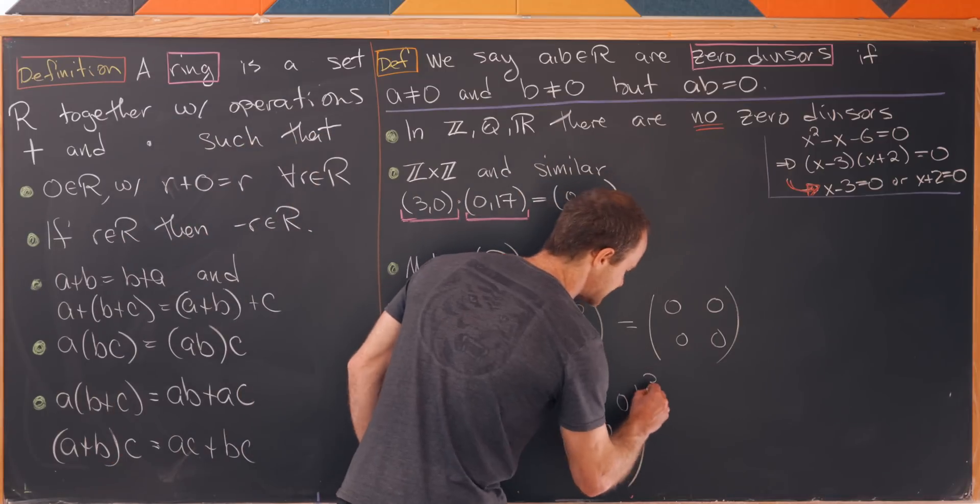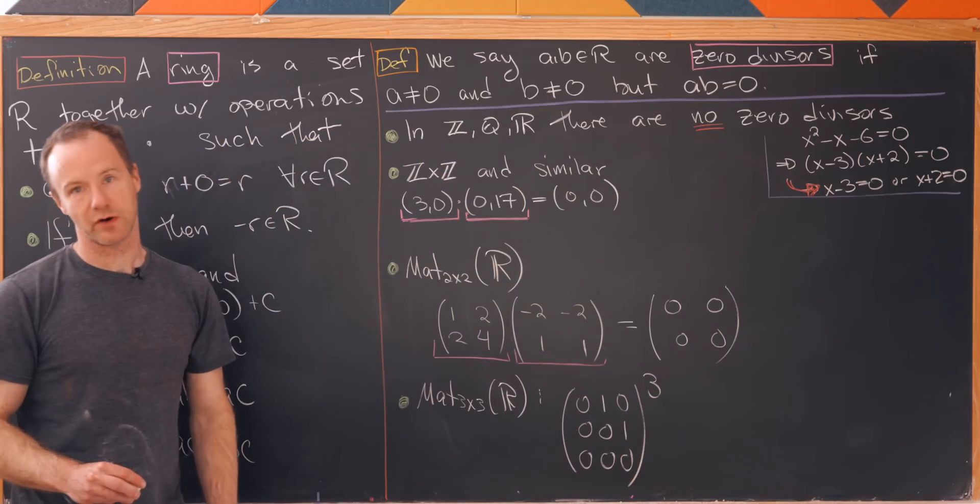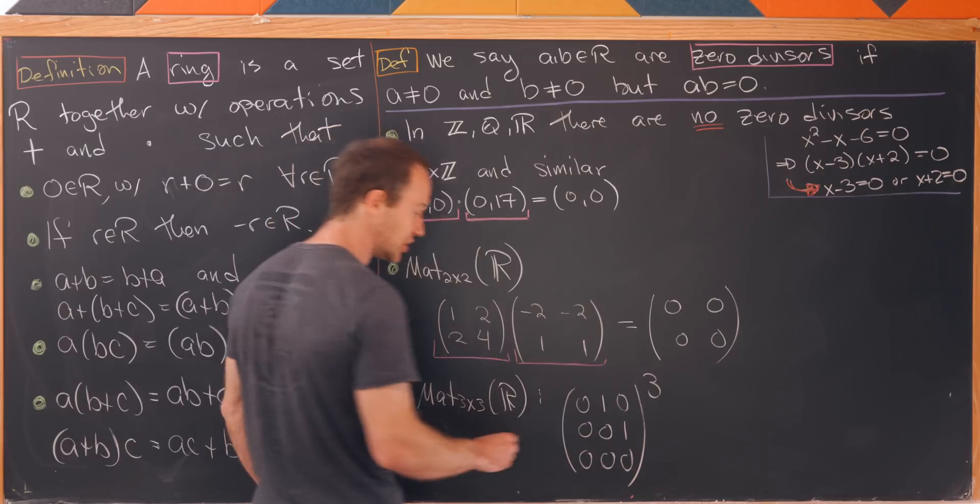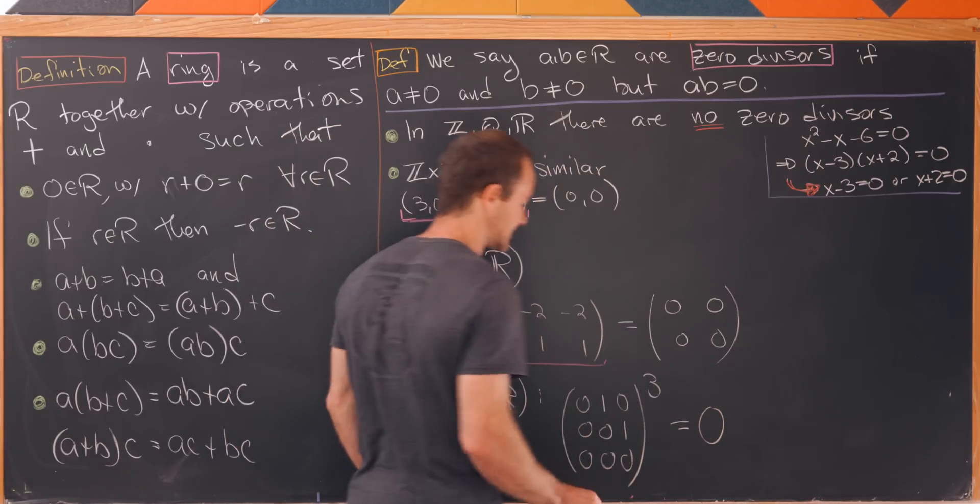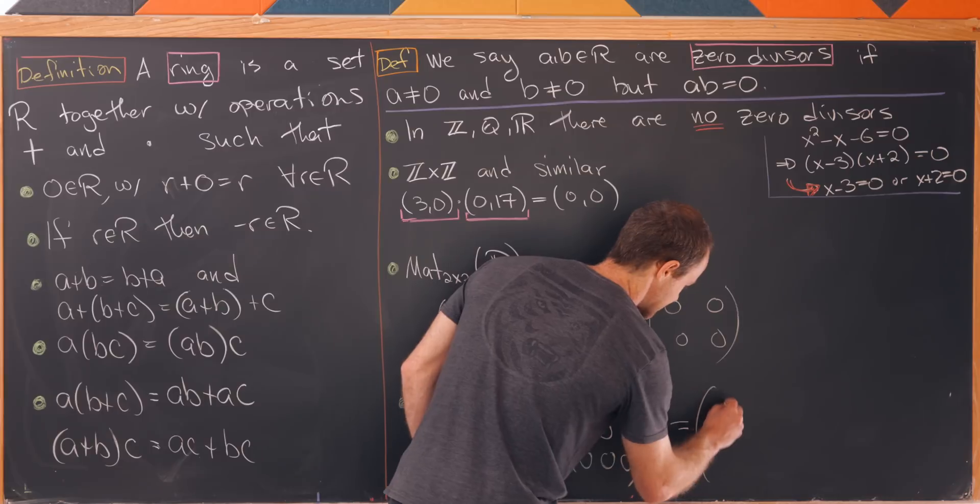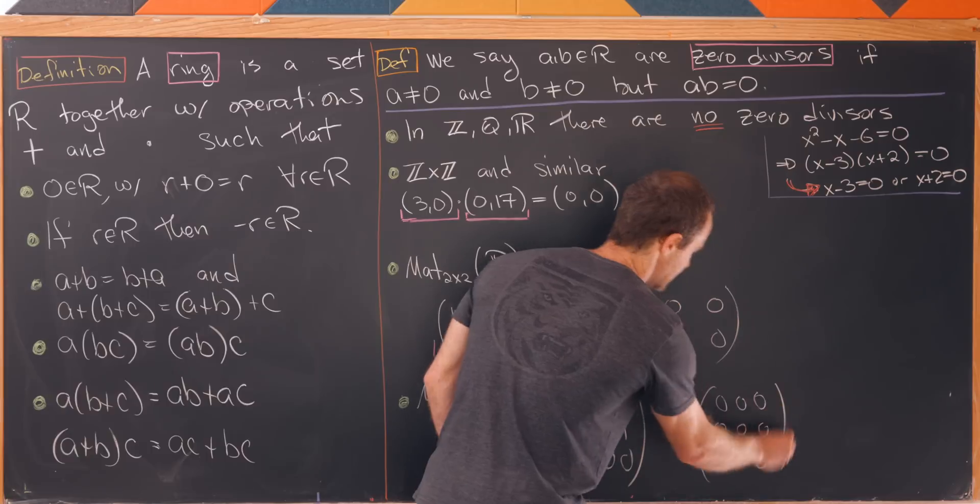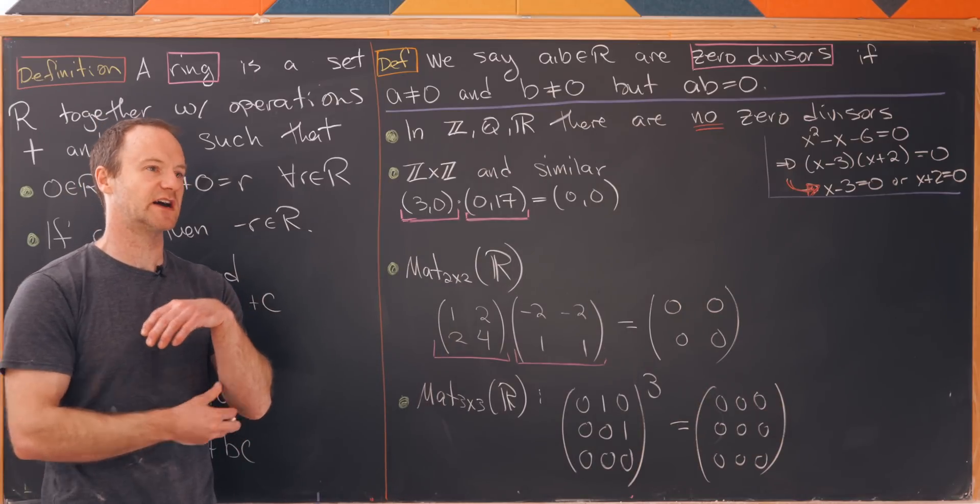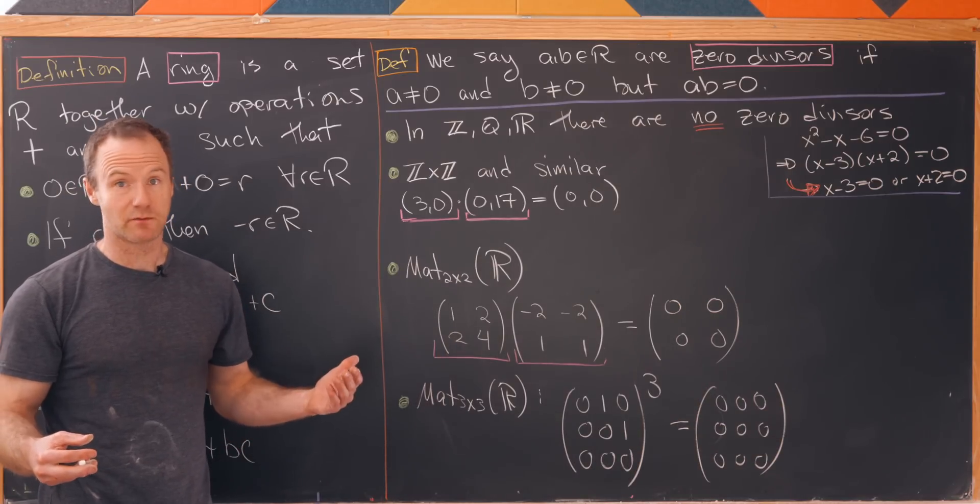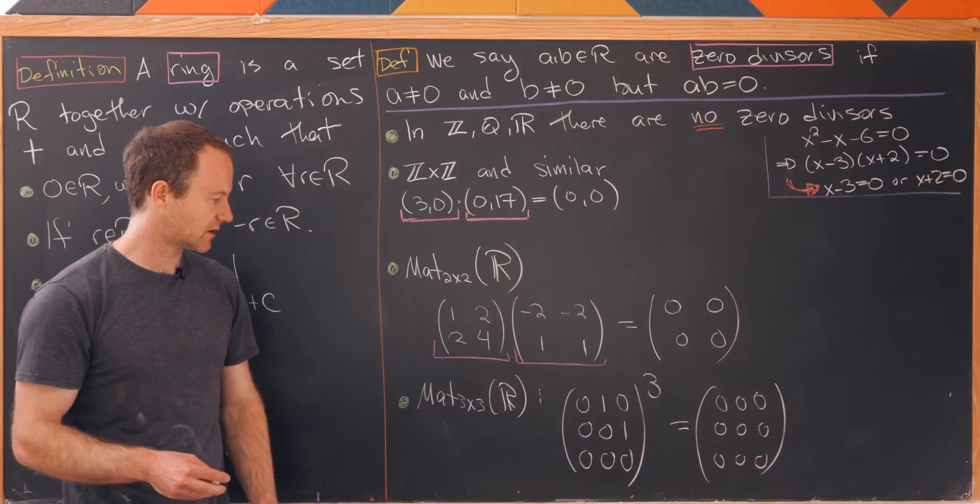But in fact this is a special type of matrix called a nilpotent matrix and if you cube this thing you in fact get the zero matrix. So I'll let you check that by doing matrix multiplication but that's a special type of zero divisor where you just have to multiply it by some power of itself to get to zero.